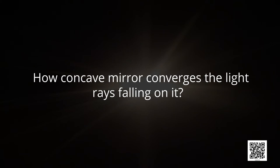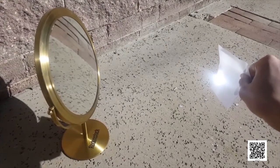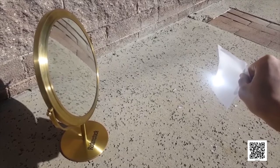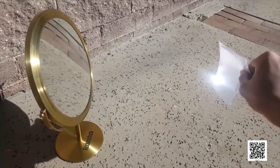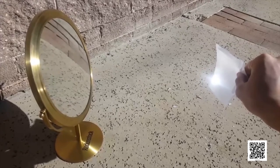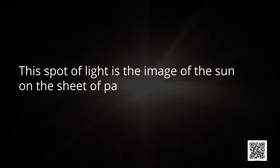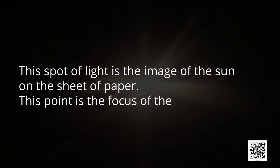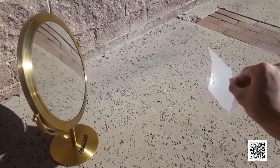Now let us see how a concave mirror converges the light rays falling on it. Hold the concave mirror and direct its reflecting surface towards the sun. Direct the reflected light onto a sheet of paper and move it back and forth until you find a bright, sharp spot of light on the paper. This spot is the image of the sun — this point is the focus of the concave mirror. You will observe that the paper starts burning due to the light rays of the sun.